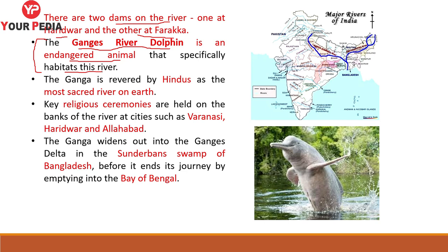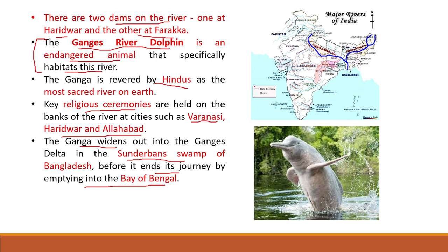The national aquatic animal of India is the Ganga River Dolphin, scientific name Platanista gangetica. It was notified by the Ministry of Environment and Forest in May 2010. This mammal represents the purity of the holy Ganga as it can only survive in pure and fresh water. These are solitary creatures and females tend to be larger than males. They are locally known as 'Susu' because of the noise they make while breathing.